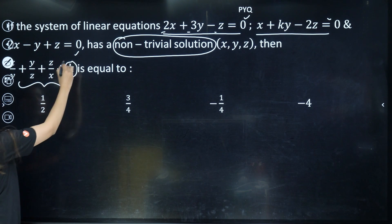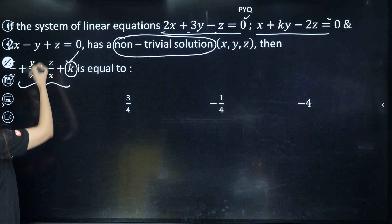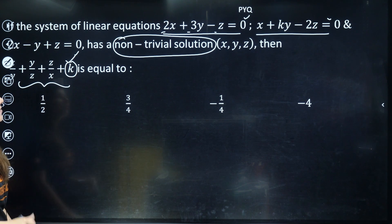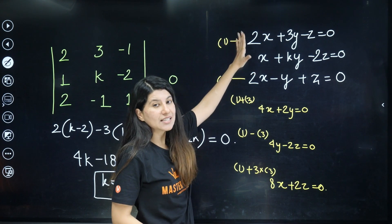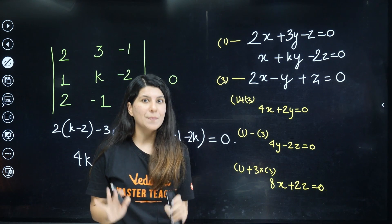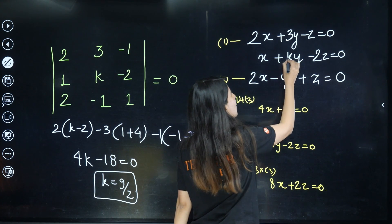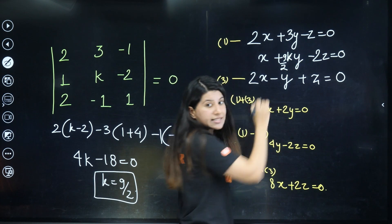Now the whole question is asking you to calculate x/y, y/z and z/x values. So what I'll be doing, I'll be having these three equations and by now I know the value of k. The value of k is nothing but 9/2, right?